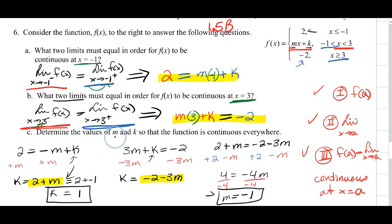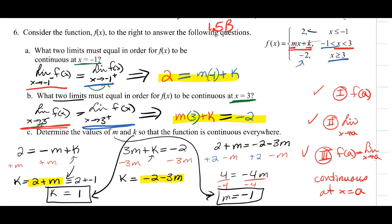Now I've determined the value of m and the value of k such that my function will be continuous everywhere — continuous across negative 1, and continuous across 3.